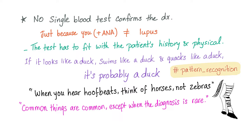For instance, the lupus patient is usually a young female in the childbearing age with a malar rash, photosensitivity, joint stiffness, maybe dark urine, mouth ulcers, et cetera. This is the pattern.